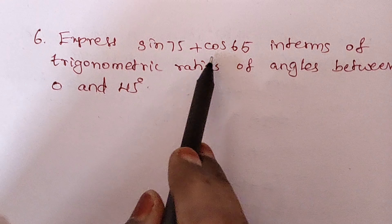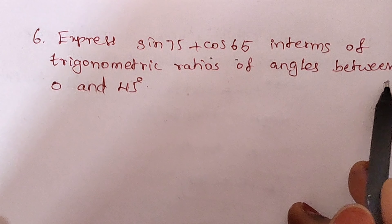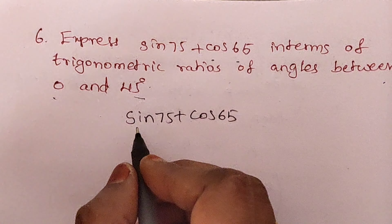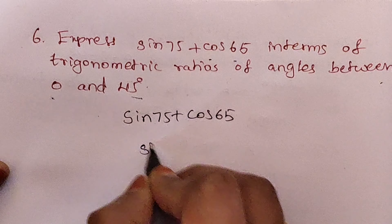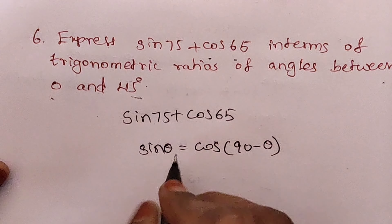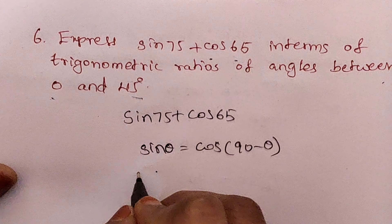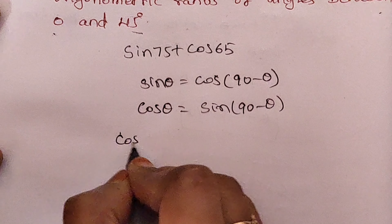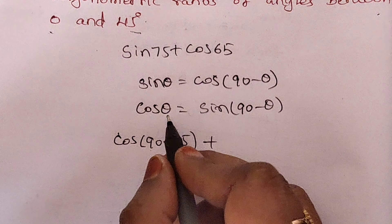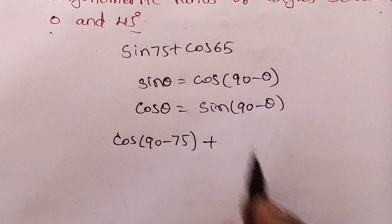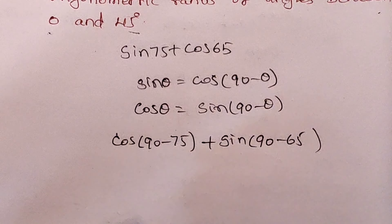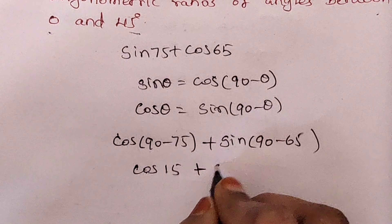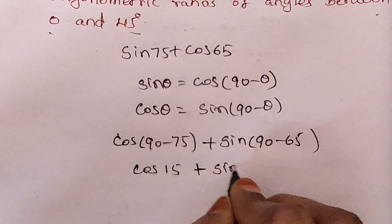Sixth question: express sin 75 plus cos 65 in terms of trigonometric ratios of angles between 0 and 45. Sin theta can be written as cos(90 minus theta), and cos theta can be written as sin(90 minus theta). So sin 75 equals cos(90 minus 75) equals cos 15, and cos 65 equals sin(90 minus 65) equals sin 25. The answer is cos 15 plus sin 25, where both angles are between 0 and 45 degrees.